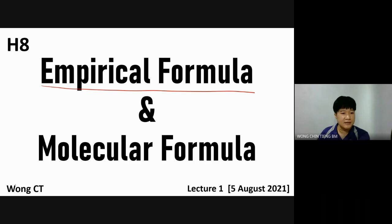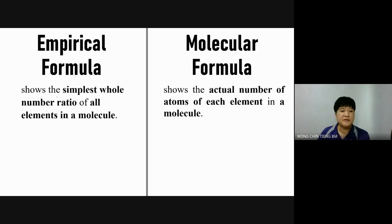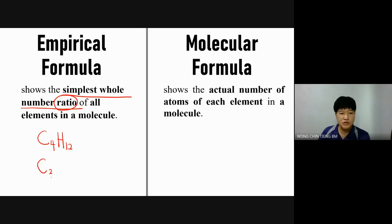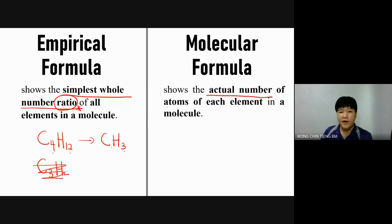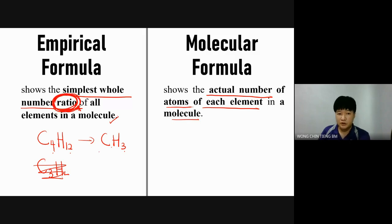We move to the second topic: empirical formula and molecular formula. Empirical formula is the simplest whole number ratio — the word 'ratio' is compulsory. Not just 'simplest whole number' — it must be 'simplest whole number ratio.' We are talking about perkadaran. For example, carbon 4, hydrogen 12 simplifies to carbon 1, hydrogen 3 — that is the ratio.